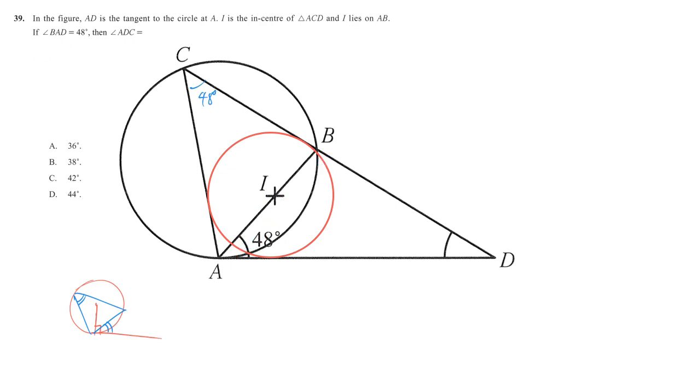If we know that angle BAD is 48 degrees, our target is angle ADC. We're going to use the property of the in-center. For the in-center, it's derived from tangents from an external point. If there is a tangent from an external point, then from the center we can draw two congruent right-angled triangles.